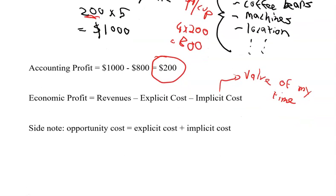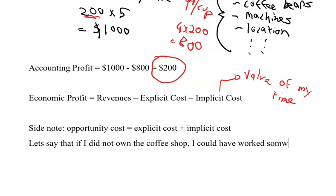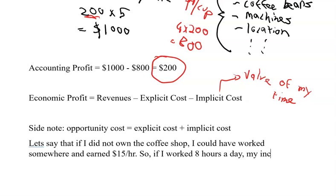So what is implicit cost here? The value of my time. Let's say that if I did not own the coffee shop, I could have worked somewhere and earned, let's say $15 per hour. So if I work eight hours a day, my income would be 15 times eight, which is $120.